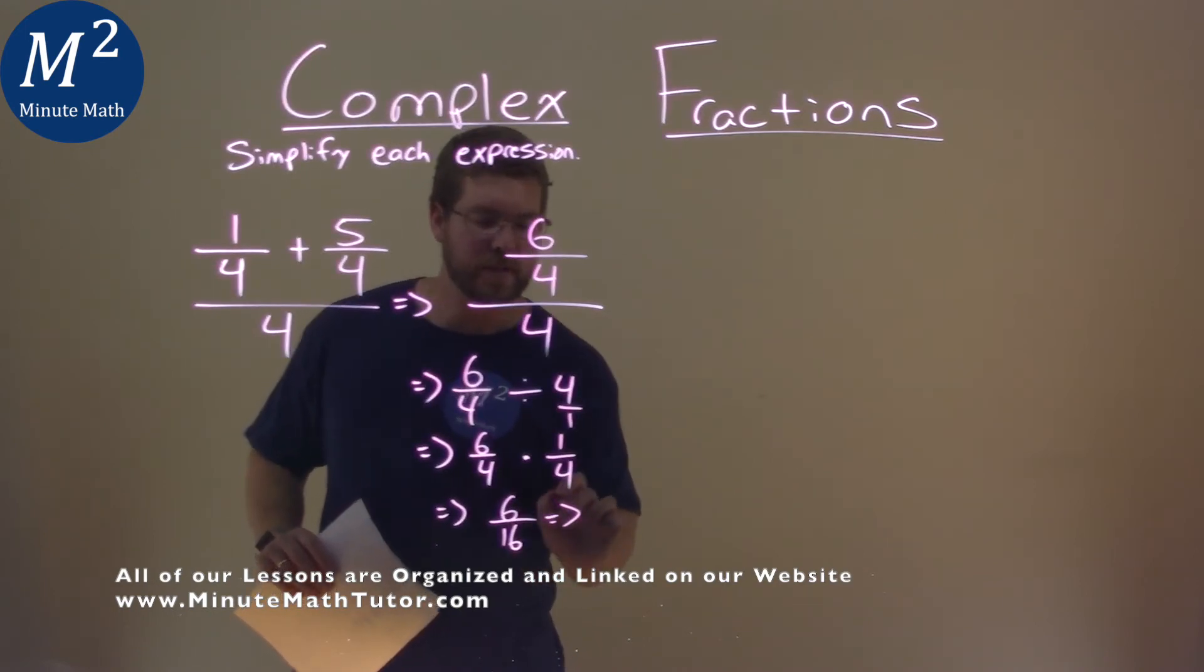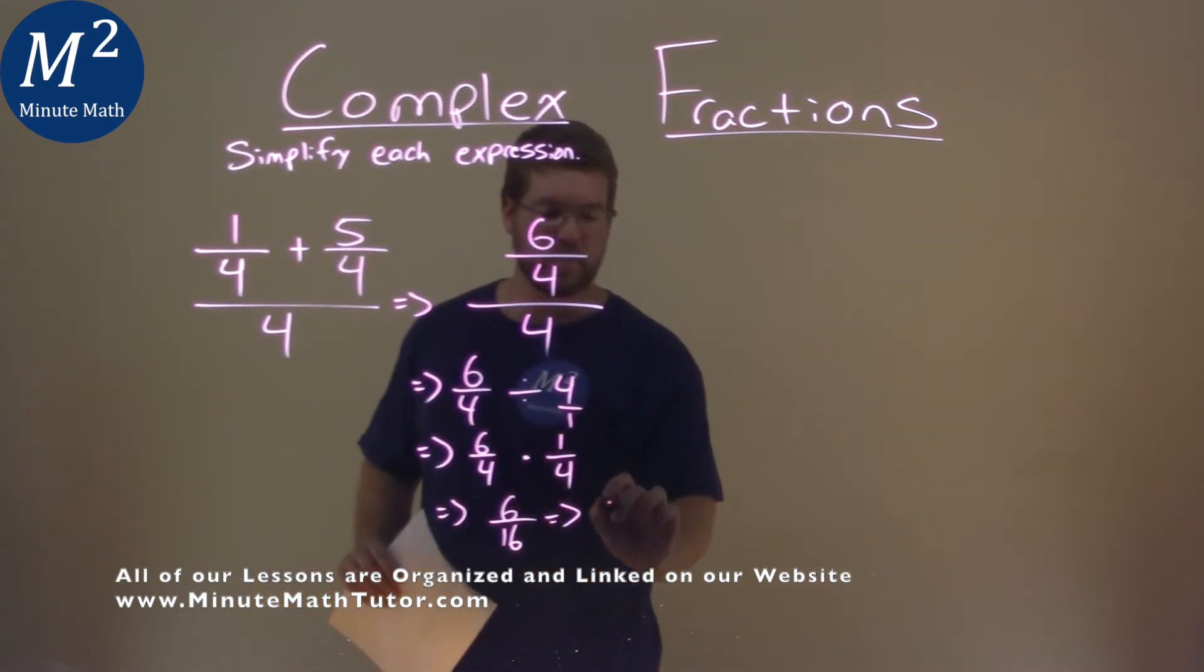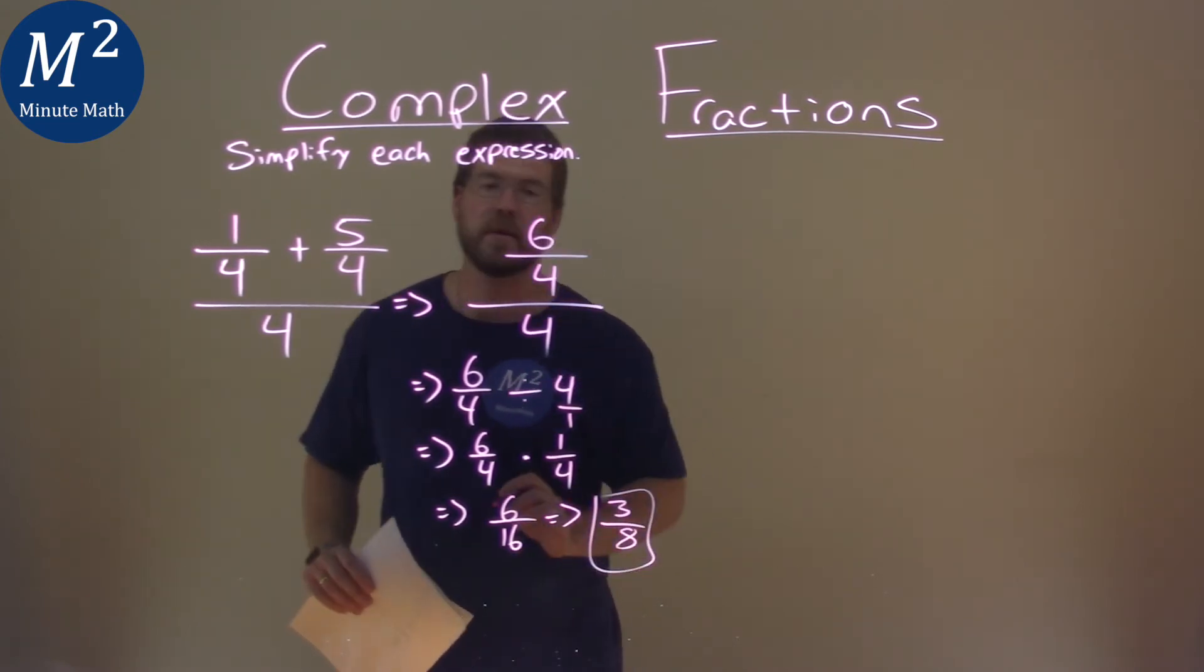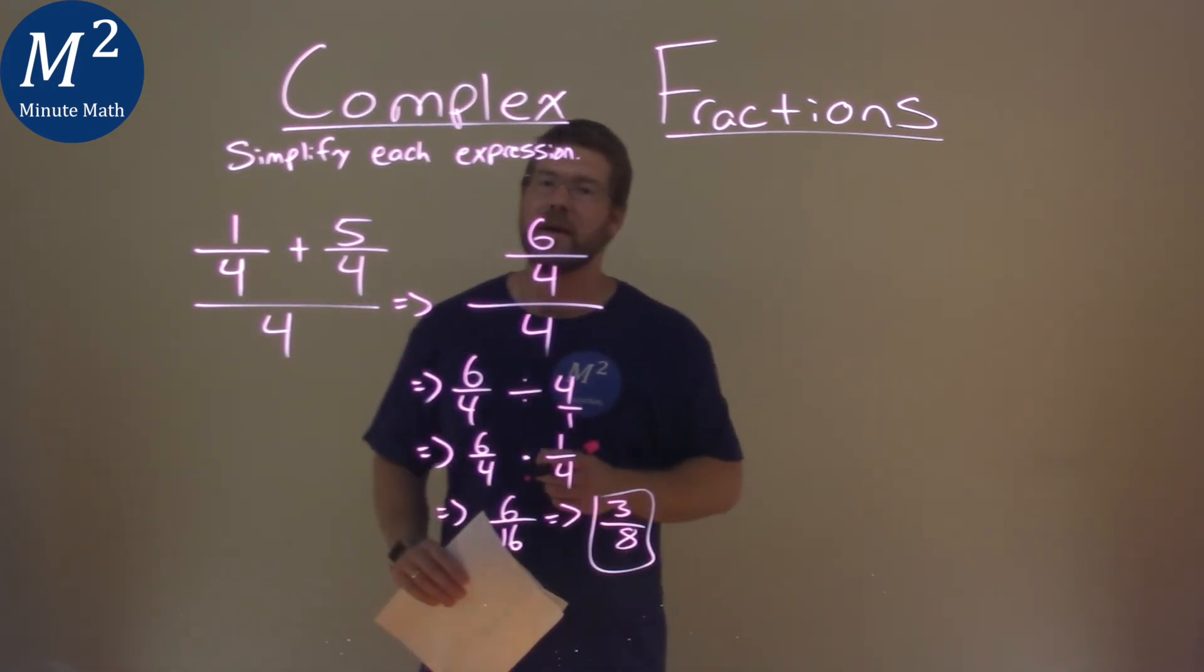Both of these numbers are divisible by 2. 6 divided by 2 is 3, and 16 divided by 2 is 8. And so our final answer here is just 3 eighths.